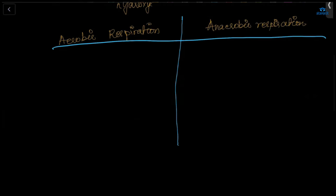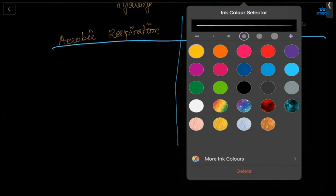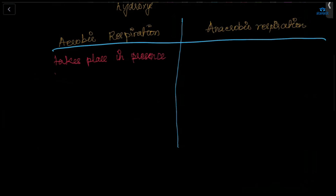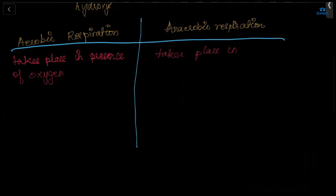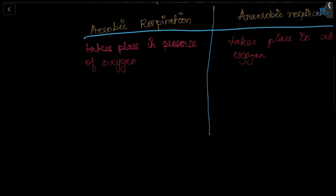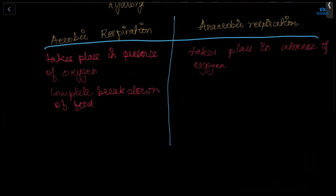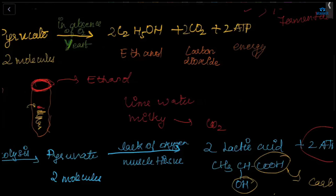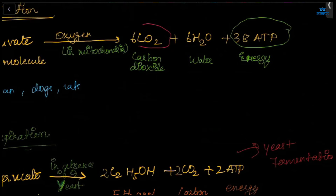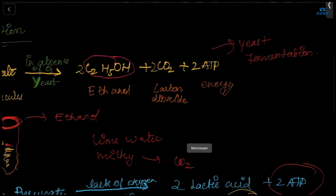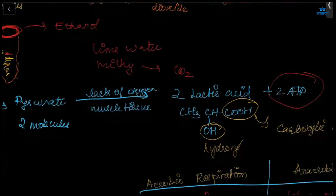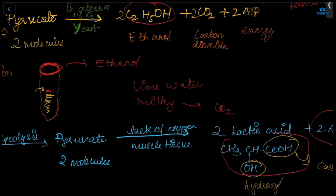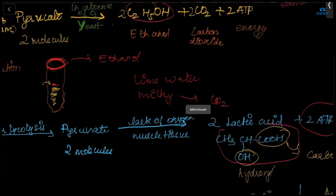The main differences between aerobic and anaerobic respiration: aerobic respiration takes place in the presence of oxygen, while anaerobic takes place in the absence of oxygen. In aerobic respiration there is complete breakdown of food, while in anaerobic there is only partial breakdown. In aerobic, the simplest products are carbon dioxide, water, and energy.